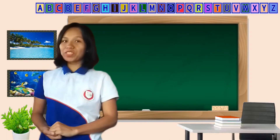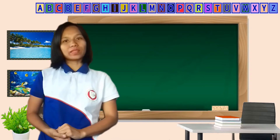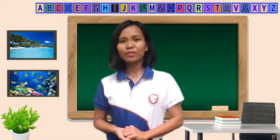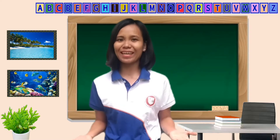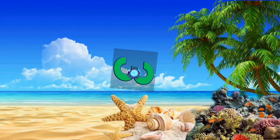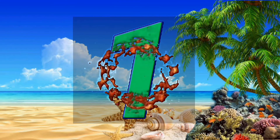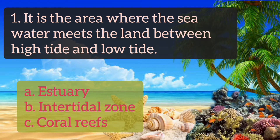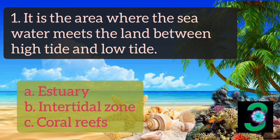Class, do you have any questions? Looks like none so far. I think everyone has already understood our lesson. So now, we'll have a quiz! Listen to the questions and write the letter of your answer on your cardboard. Raise your cardboard when the timer rings. Question 1: It is the area where the seawater meets the land between high tide and low tide. A. Estuary, B. Intertidal zone, C. Coral reefs. The answer is letter B.